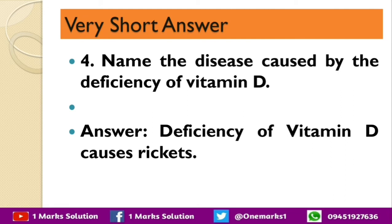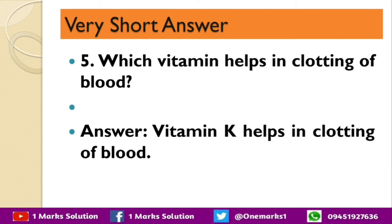Name the disease caused by the deficiency of vitamin D. The answer is: deficiency of vitamin D causes rickets. Which vitamin helps in clotting of blood? Vitamin K helps in clotting of blood.